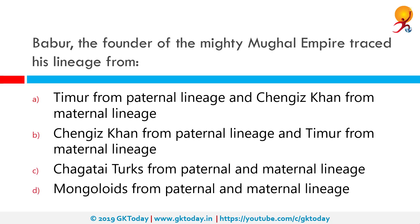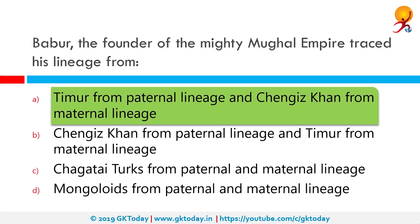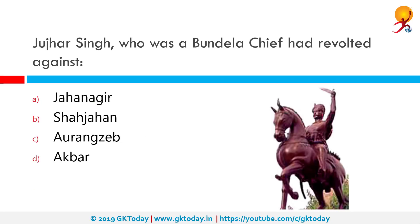Babur, the founder of the mighty Mughal Empire, traced his lineage to Timur from the paternal side and Genghis Khan from the maternal side. Jujhar Singh, who was a Bundela chief, had revolted against Shah Jahan, while many Bundela chiefs served the Mughals loyally.